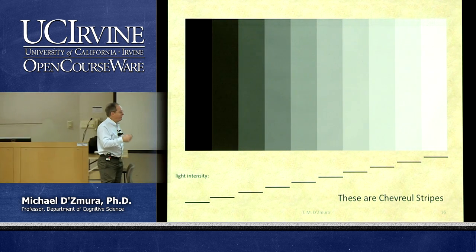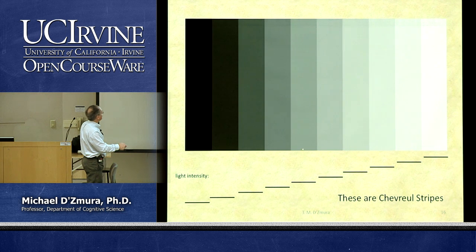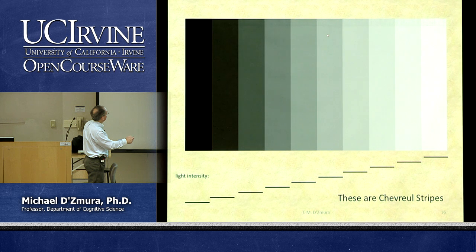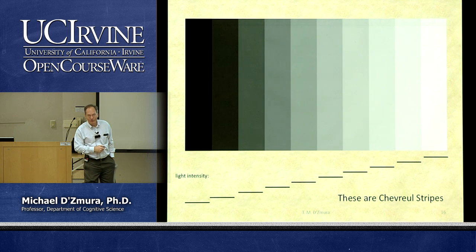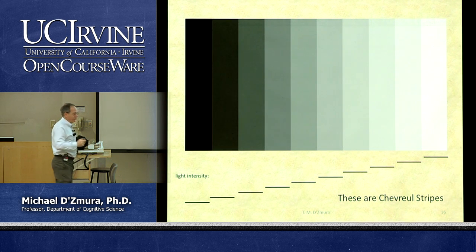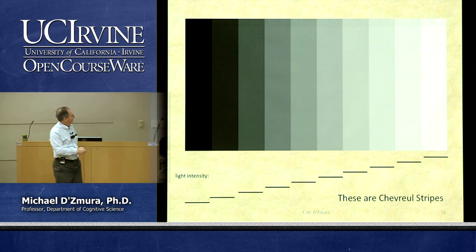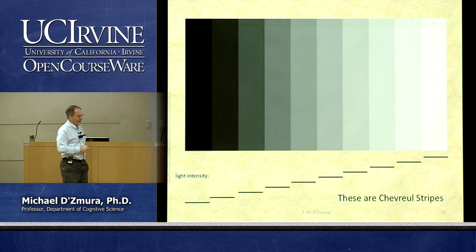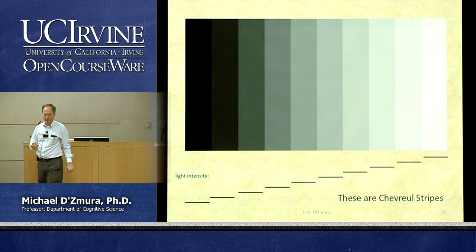The visual system is comparing light levels. On the right side of a bar, the gray is being compared to something brighter in the adjacent bar, so by contrast it ends up looking darker. On the left side of that same bar, the gray is being compared to a darker adjacent bar, so by contrast it ends up looking lighter. The same reasoning explains why on the left it looks lighter and on the right it looks darker.